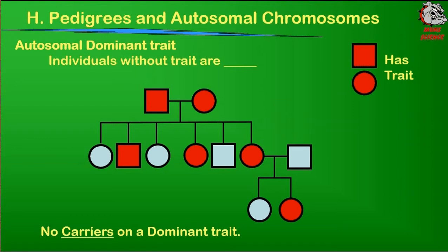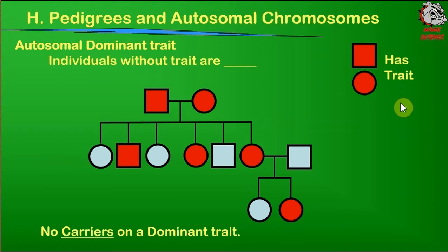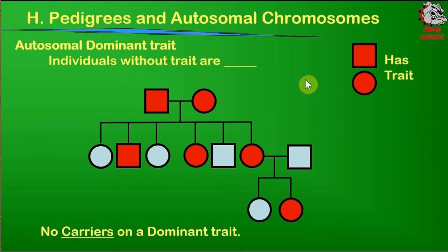What you have to look at is you've got to have a coding for individuals that have the trait. The trait we're looking at — this could be something like eye color; it doesn't have to be diseases. So we're showing in the upper right that if a person has the trait we're interested in, they are colored in red. Since it's a dominant trait, they have to have one dominant gene. Individuals without the trait must have the homozygous recessive genotype.